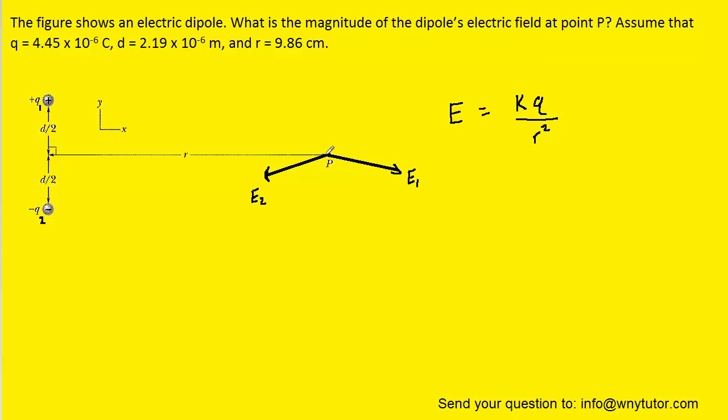Next we'll have to break these two electric fields into their X and Y components. Electric fields are known as vector quantities, so when we add them together we have to add the X components separately from the Y components. For E1 we have an X component that's pointing to the right and then the Y component is pointing down. For E2 the X component is pointing to the left and the Y component is also pointing down.